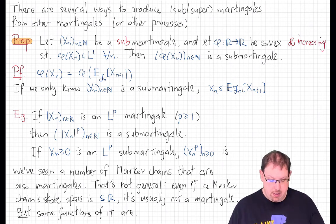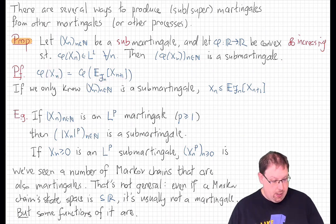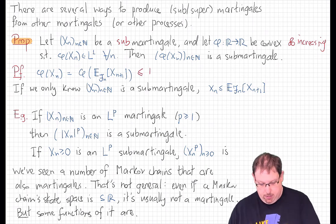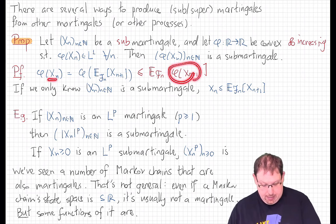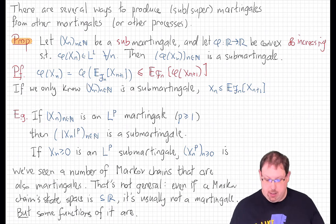So let's quickly prove this. First, suppose that we start with a martingale and phi is a convex function, not necessarily increasing. Since x_n is a martingale, x_n equals the conditional expectation of x_{n+1} given F_n, and now taking phi of that, we'll use the conditional Jensen's inequality that we proved earlier to see that that's less than or equal to the conditional expectation on F_n of phi of x_{n+1}. That shows us exactly that phi of x_n is a sub-martingale. Implicit here is the assumption that phi of x_n is L1 for every n, since that's part of the definition of martingale or sub-martingale.